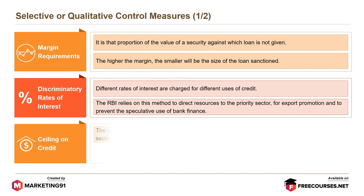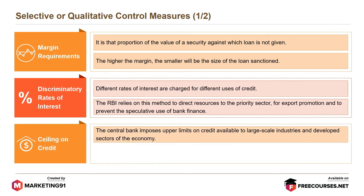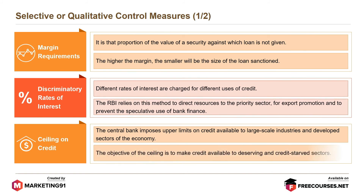Ceiling on credit: the central bank imposes upper limits on credit available to large-scale industries and developed sectors of the economy. The objective of the ceiling is to make credit available to deserving and credit-starved sectors.